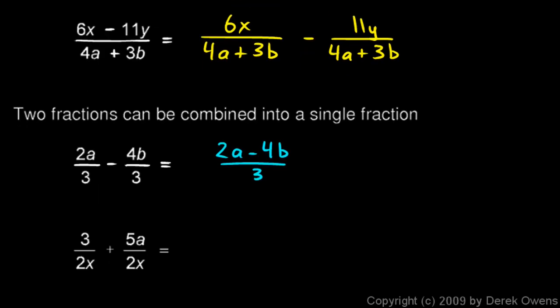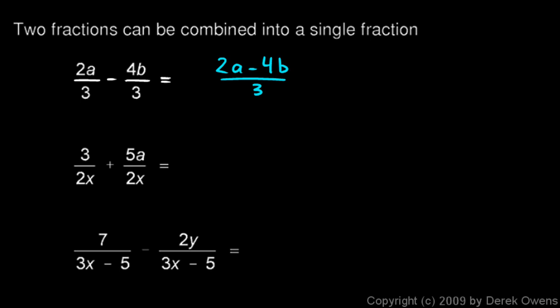A couple more examples similar to that. 3 over 2x plus 5a over 2x could be written as 3 plus 5a over 2x. And the last one: 7 over 3x minus 5 minus 2y over 3x minus 5. We note that these denominators are the same, so we can combine the numerators. That's 7 minus 2y over 3x minus 5.